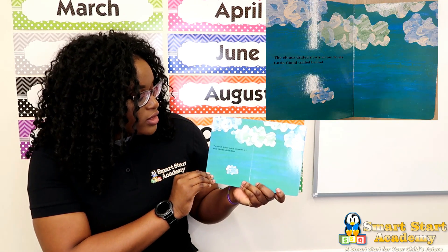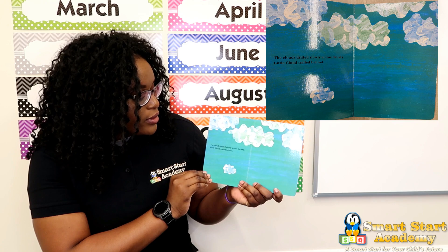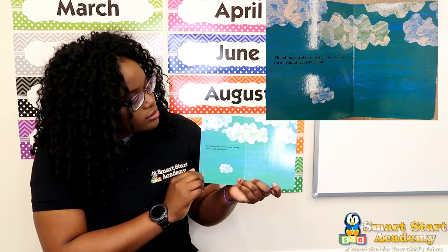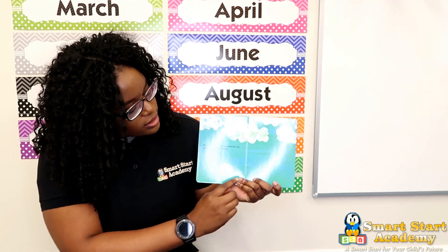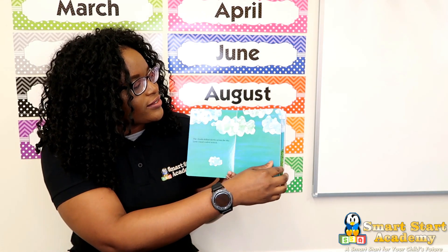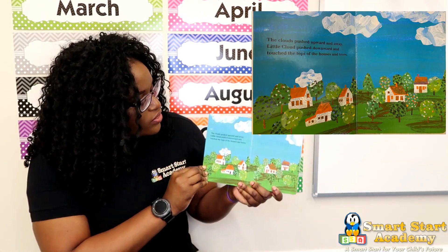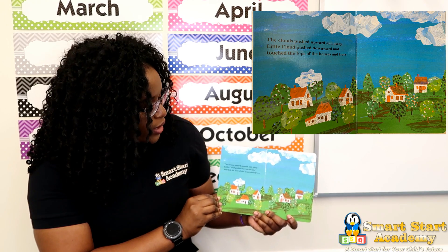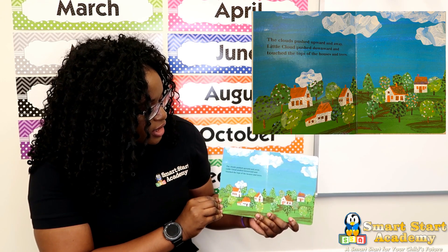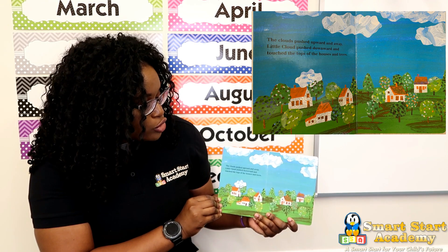The clouds drifted slowly across the sky. Little cloud trailed behind. You see the bigger clouds and we have the little baby cloud. The clouds pushed upward and away. The cloud pushed downward and touched the tops of the houses and trees.